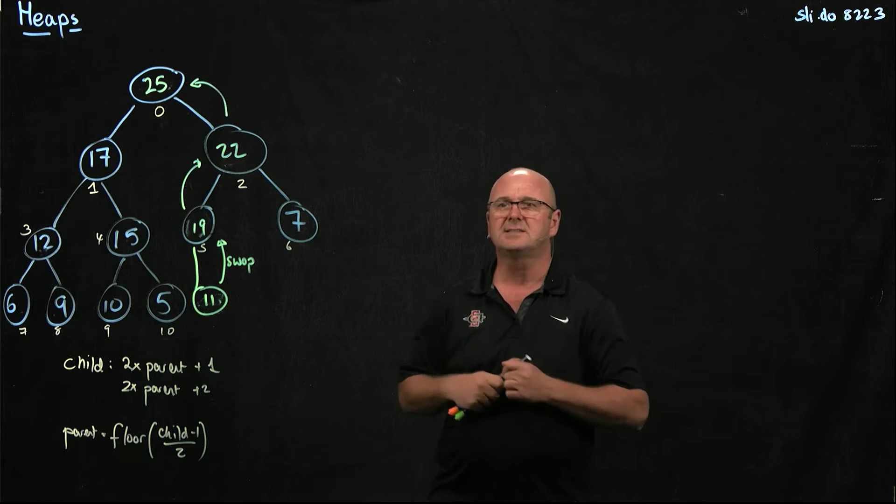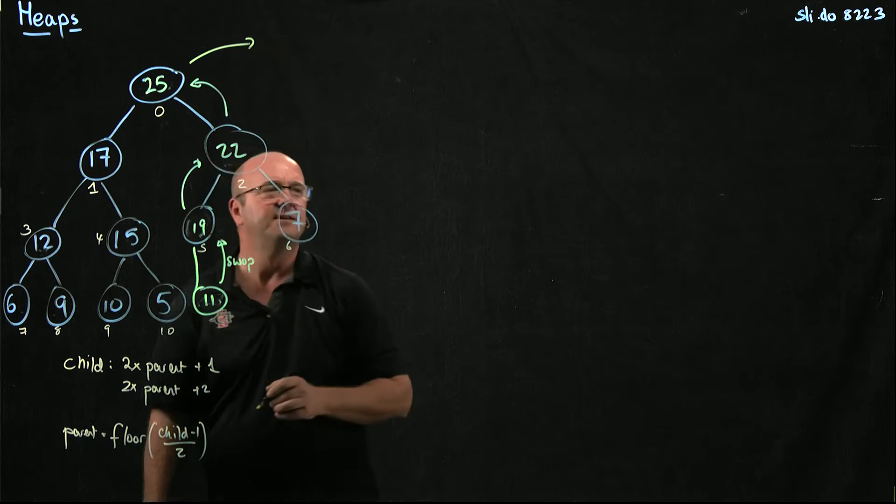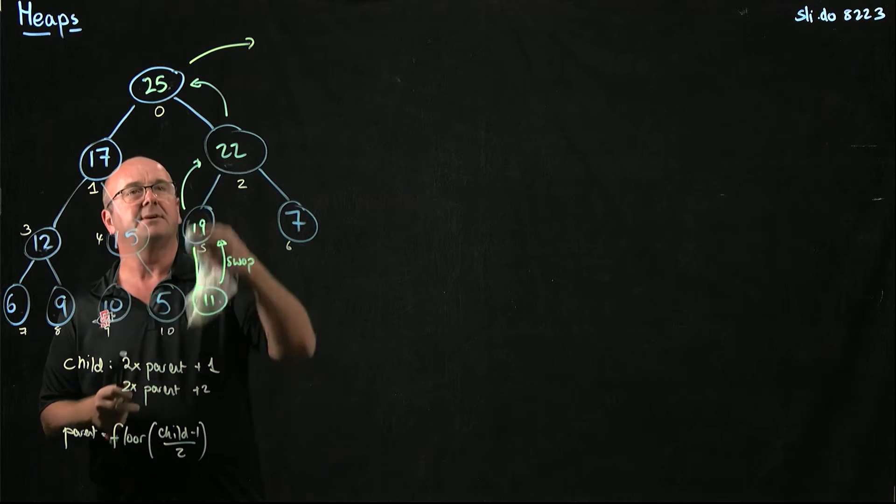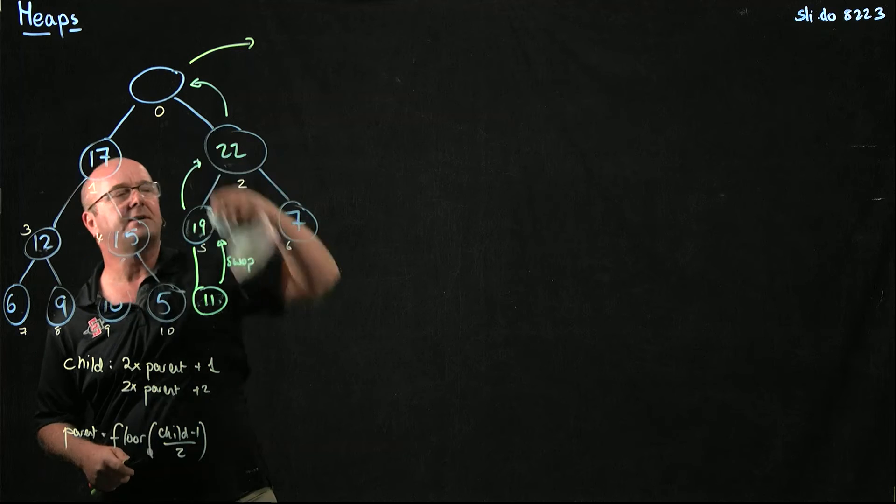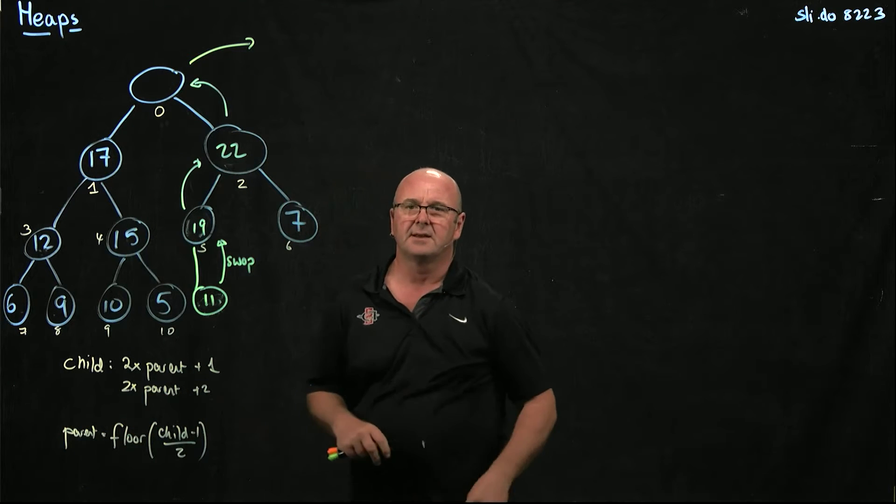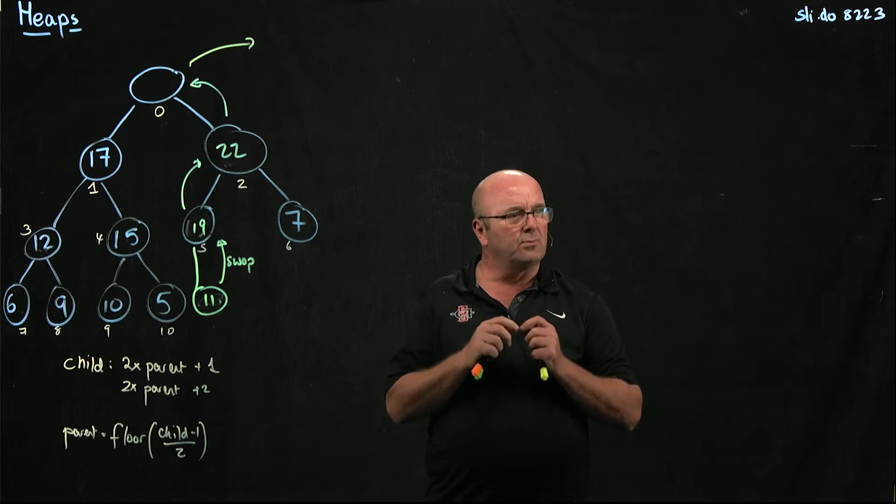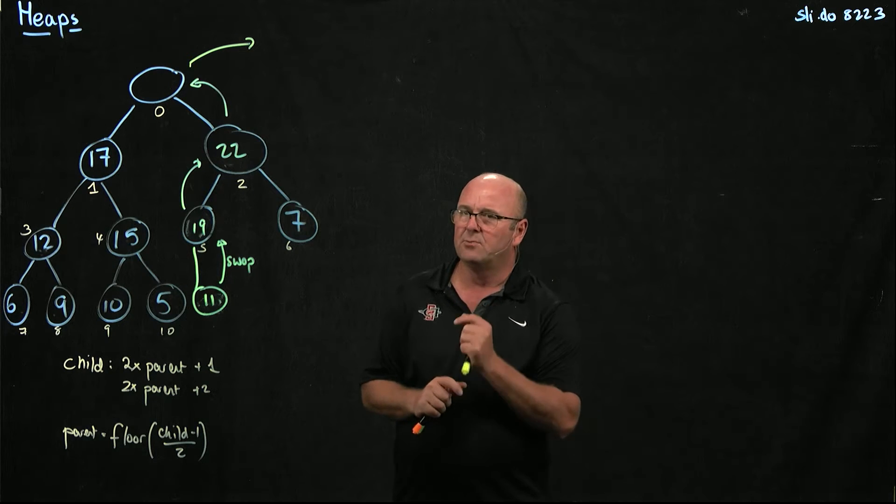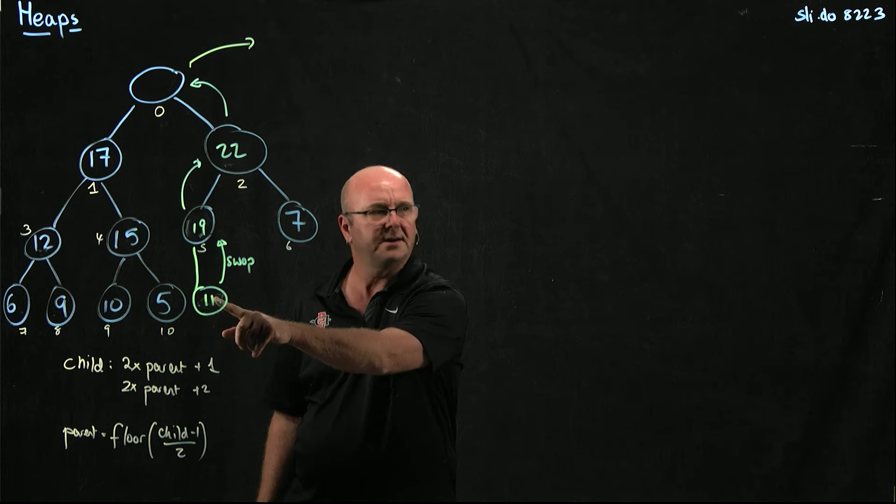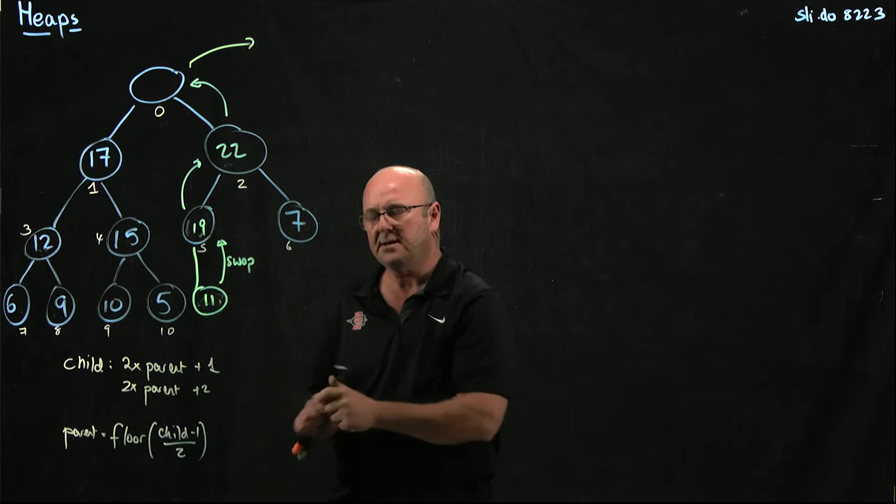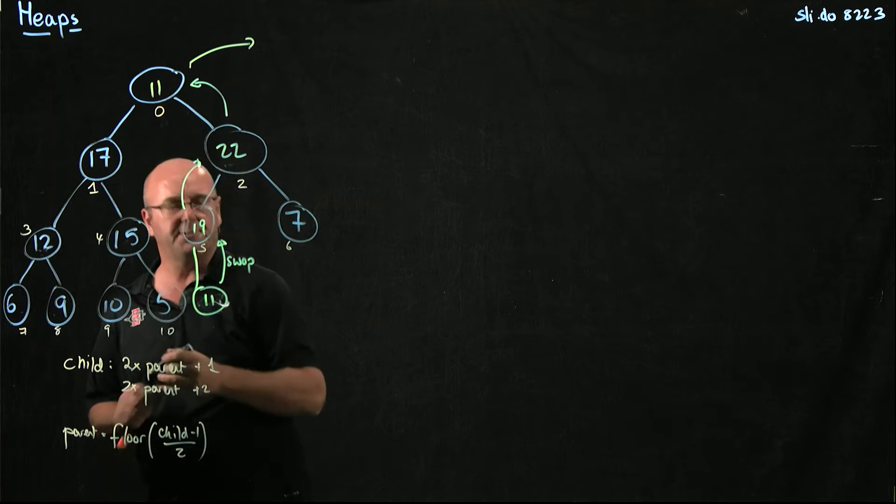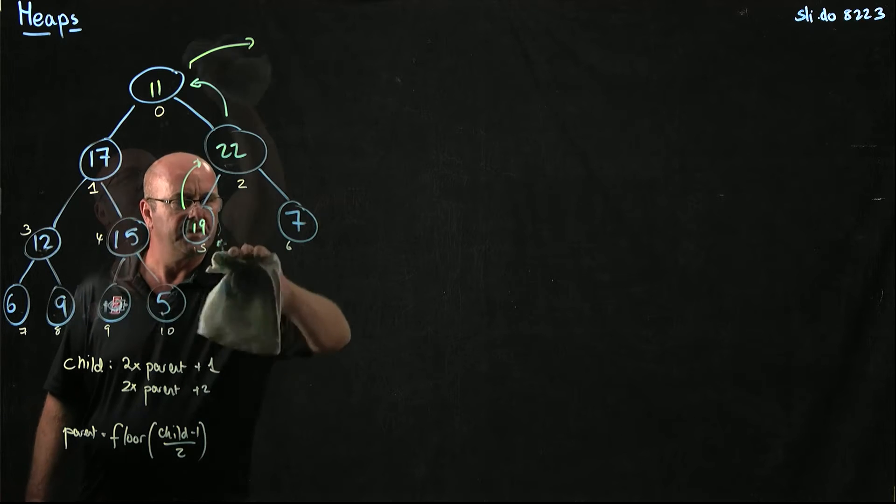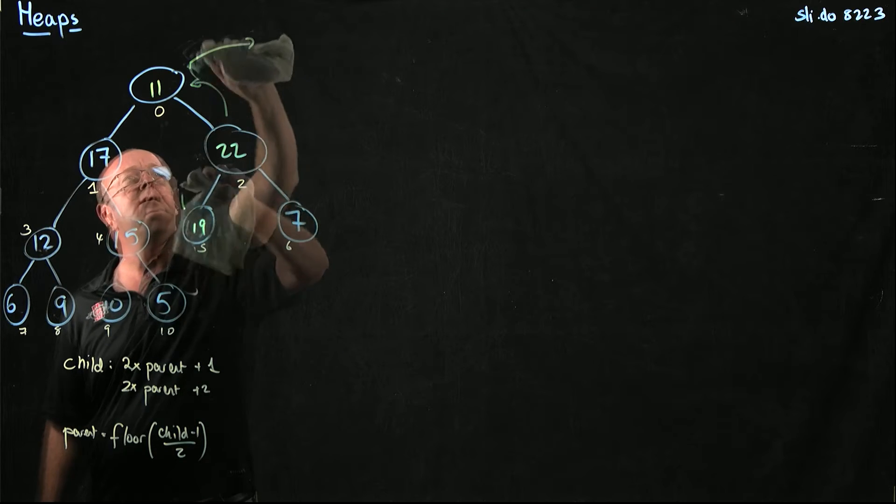So in this case, we would take the 25. If we're going to remove it, we take away the 25. Now we've got a hole. Now what do we do with the hole? Once we've taken away the root, we've got a hole, and now we have to fill it with the last thing in our heap. So we take the 11 and we put it up in our root position.